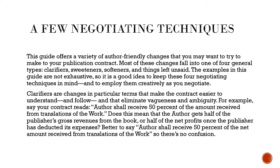This guide offers a variety of author-friendly changes that you may want to try to make to your publication contract. Most of these changes fall into one of four general types: clarifiers, sweeteners, softeners, and things left unsaid. Clarifiers are changes in particular terms that make the contract easier to understand and eliminate vagueness and ambiguity. For example, say your contract reads: 'Author shall receive 50% of the amount received from translations of the work.' Does this mean the author gets half of the publisher's gross revenues, or half of the net profits once the publisher has deducted its expenses? Better to say 'author shall receive 50% of the net amount received' so there's no confusion.